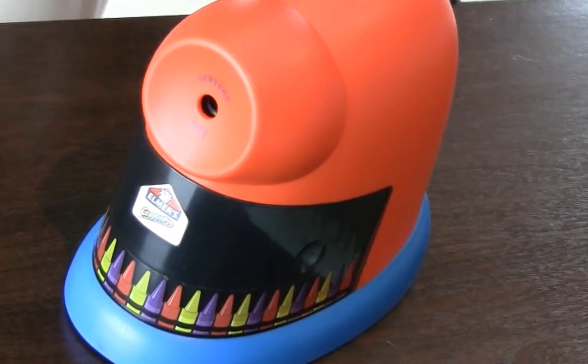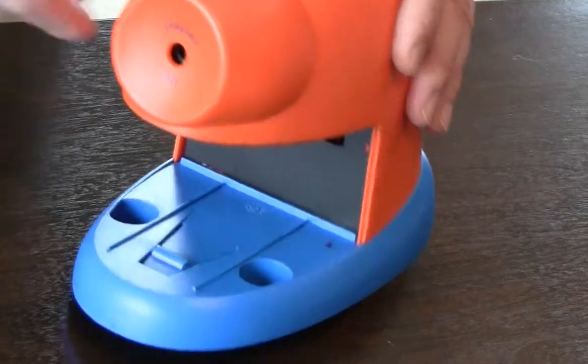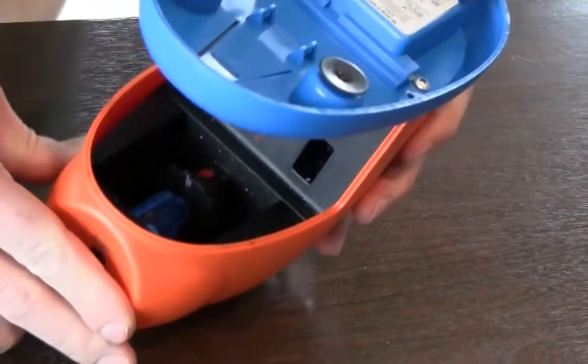Begin by unplugging the Elmer's Crayon Pro Sharpener from the wall. Next, remove the crayon shavings receptacle and turn the sharpener over to access the blue blade cartridge inside the sharpener cover.